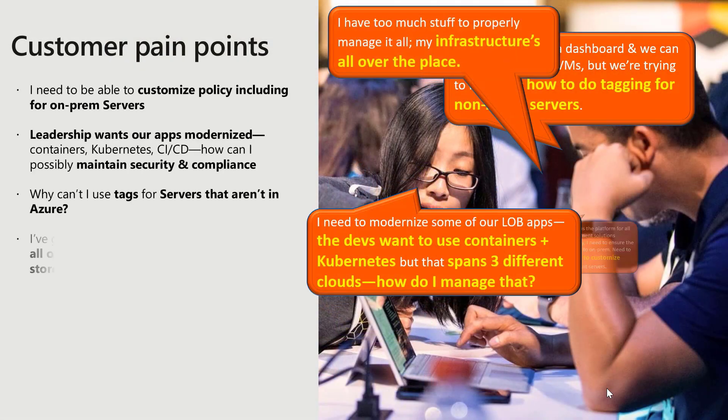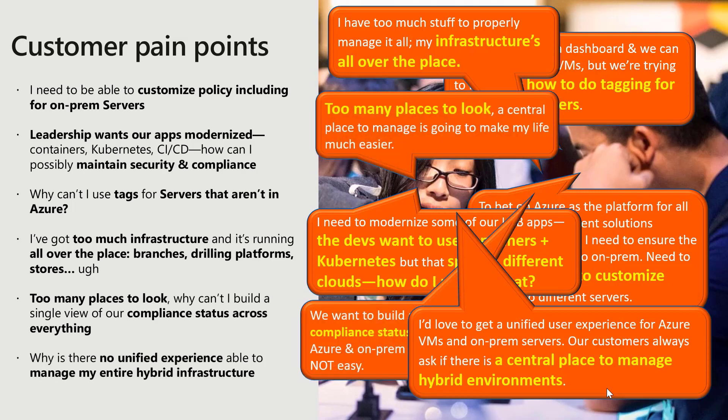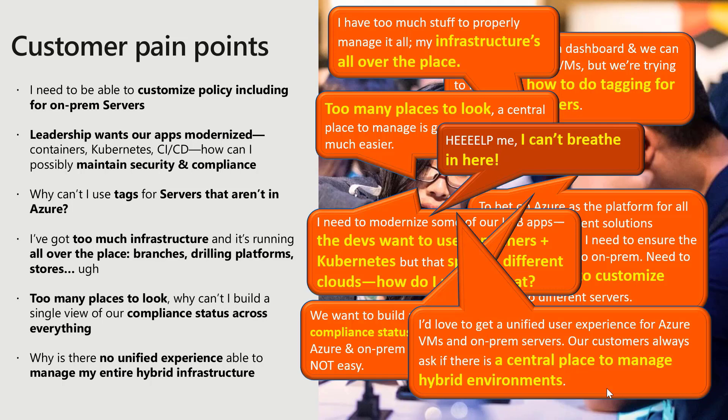We've heard a lot of customer pain points. They struggle to ensure all their servers running in different infrastructure have the same policy and are configured the right way. There are too many places to look at and no central place where they can see all their systems. Sometimes they use different management tools for on-prem vs. cloud, and they can't easily get edge locations into their CMDB. Making sure everything is compliant with company policies becomes even more complex and difficult.